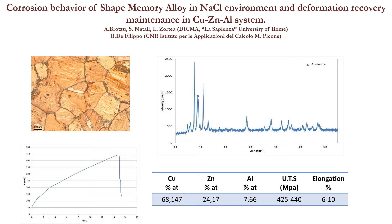A complete metallographic and mechanical characterization has been carried out. We obtained materials with a relatively coarse martensitic grain surrounded by a second phase. Sporadic austenitic grain has also been observed.